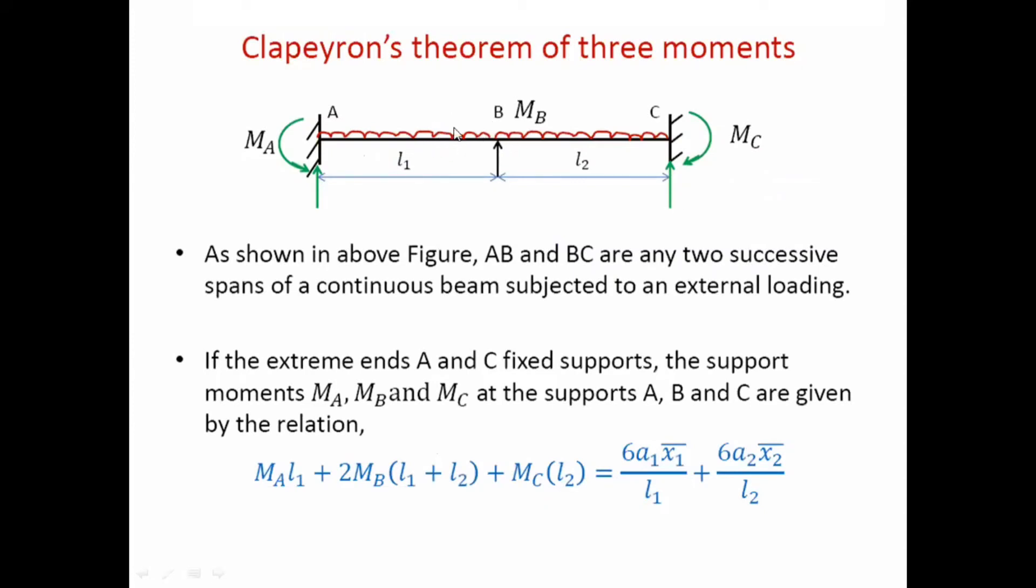We have to basically separate out these two spans AB and BC, remove the fixity for both spans, and draw the free BMD. Free BMD means whatever external load is there on the span, you draw the bending moment diagram for that span. If it is point loads, multiple point loads, UDL, uniformly varying load—anything—for that particular load you draw the bending moment diagram for that simply supported span.